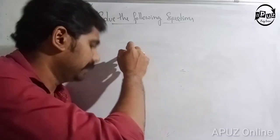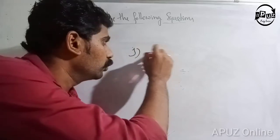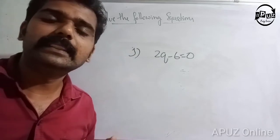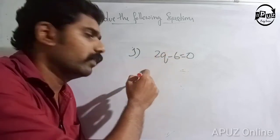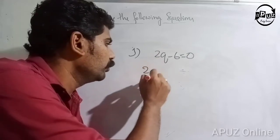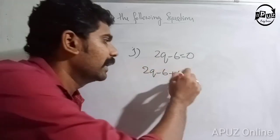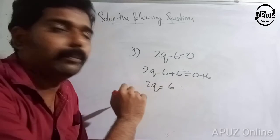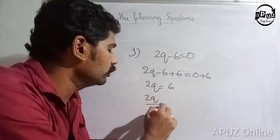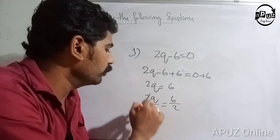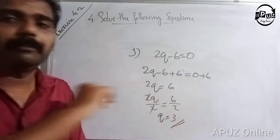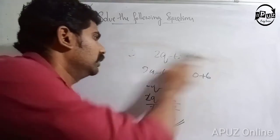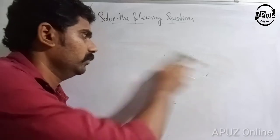Question J: 2q minus 6 is equal to 0. Add 6 to both sides: 2q minus 6 plus 6 is equal to 0 plus 6. So 2q is equal to 6. Divide both sides by 2: 2q divided by 2 is equal to 6 by 2. The 2s cancel, so q is equal to 3.